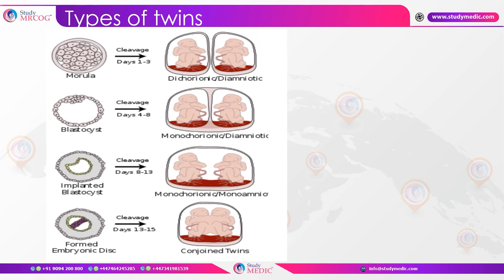Types of twins are divided based on when cleavage occurred in the embryo. If cleavage occurs between days 1 to 3, it results in dichorionic diamniotic twins with separate chorions and amniotic sacs. If cleavage occurs between day 4 and day 8 in the blastocyst stage, the chorion is shared but the amnion is separate — that is monochorionic diamniotic twins.